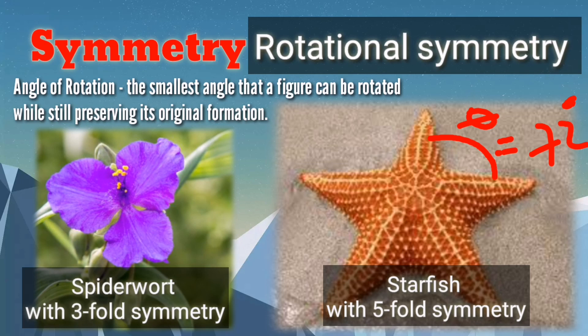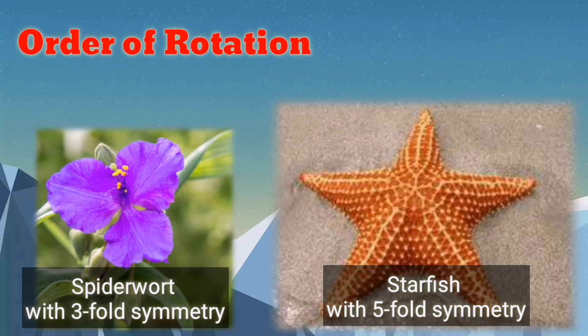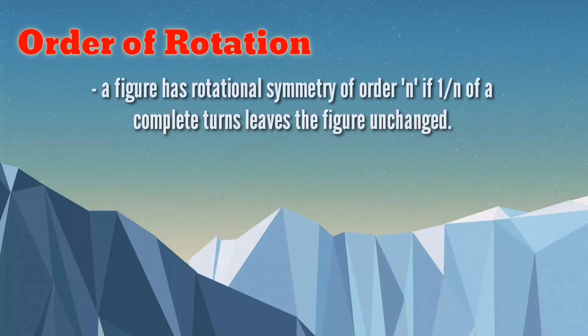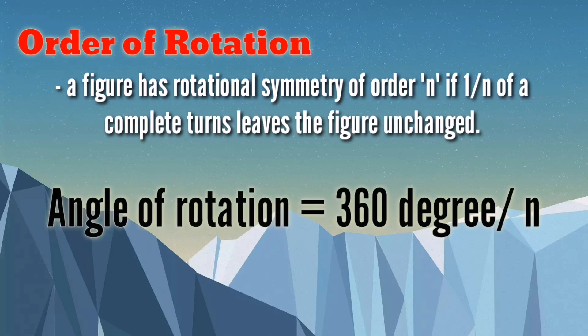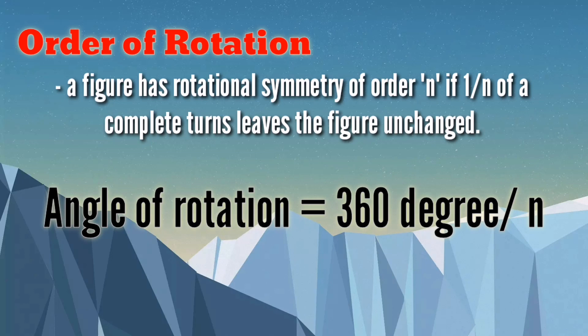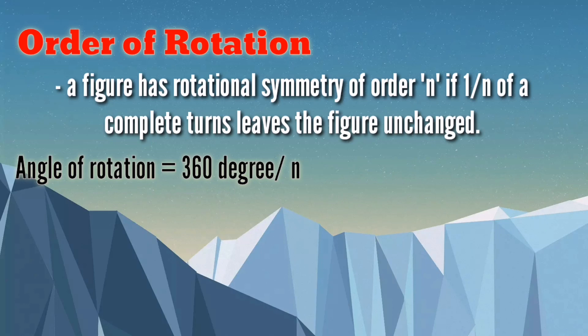A more common way of describing rotational symmetry is by order of rotation. A figure has a rotational symmetry of order n, where n refers to the fold rotational symmetry, if one over n of a complete turn leaves the figure unchanged. To compute for the angle of rotation, we use the formula: angle of rotation equals 360 degrees over n, the fold rotational symmetry.